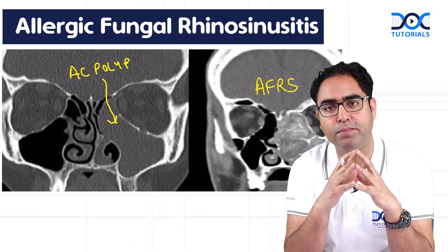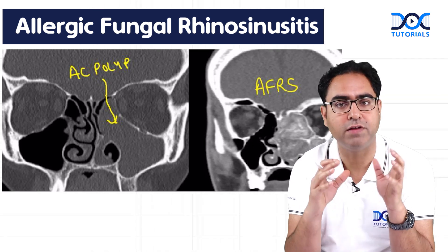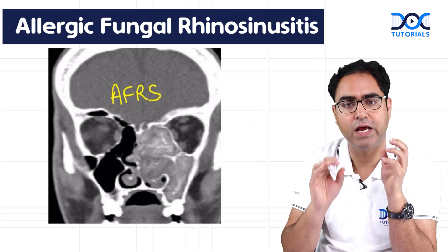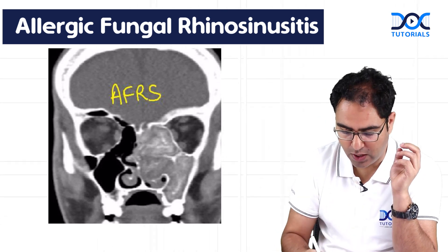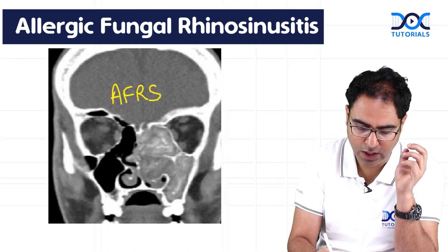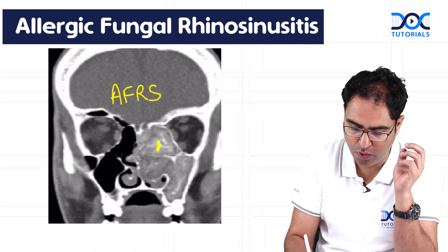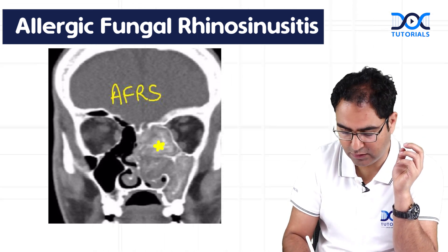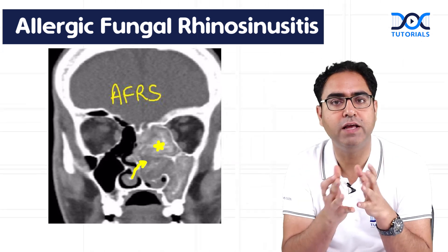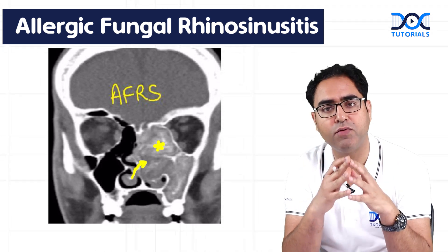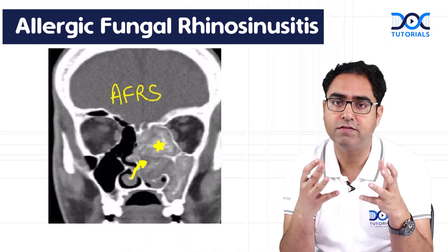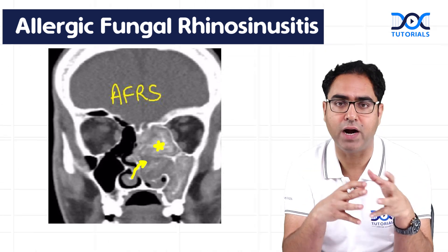The AFRS polyp will be heterogeneous in appearance. If you see this picture, you can see very clearly that this polyp has a different type of appearance — this particular area is more isodense than this inflammatory edema. Why is it double density, or why is it heterogeneous? Because of fungal debris within it, and fungal debris is more dense than the inflammatory edematous part.